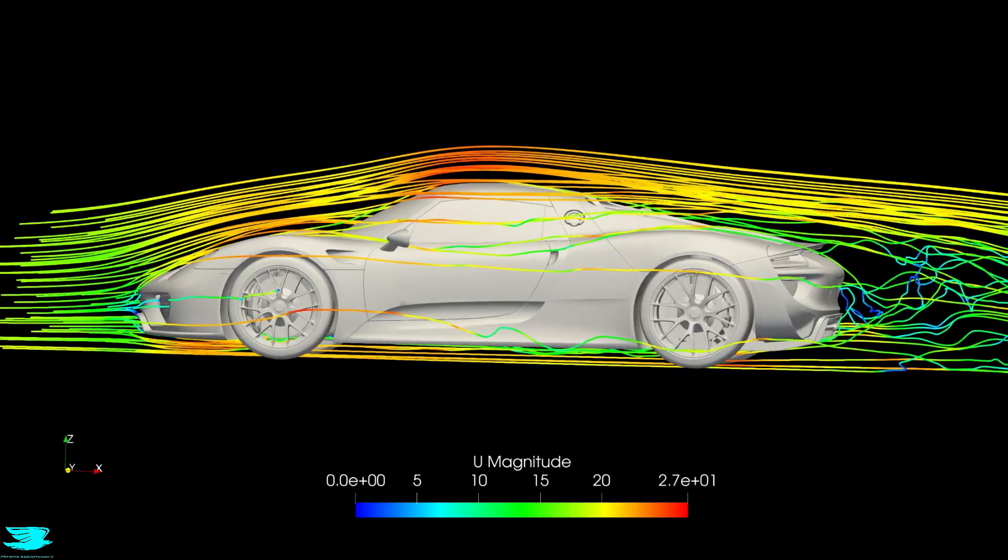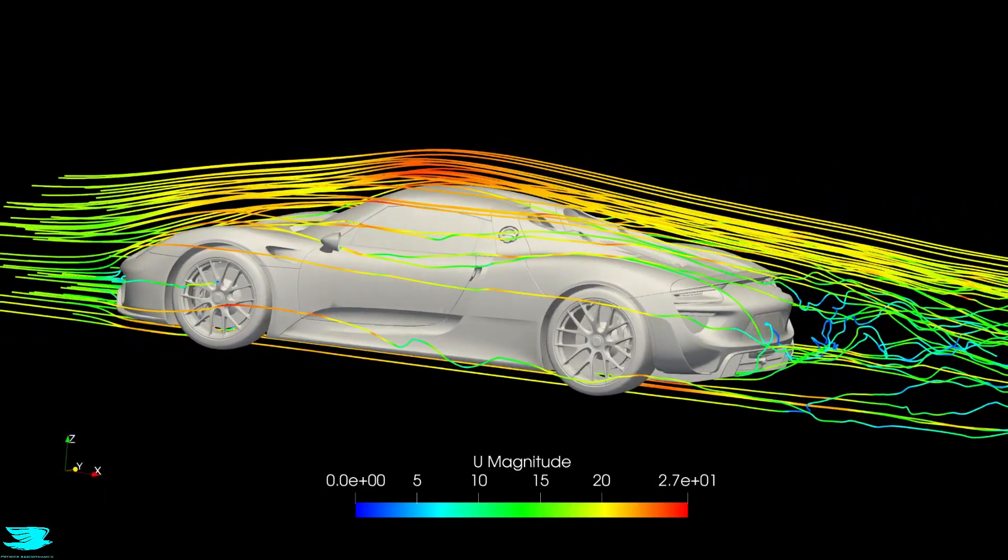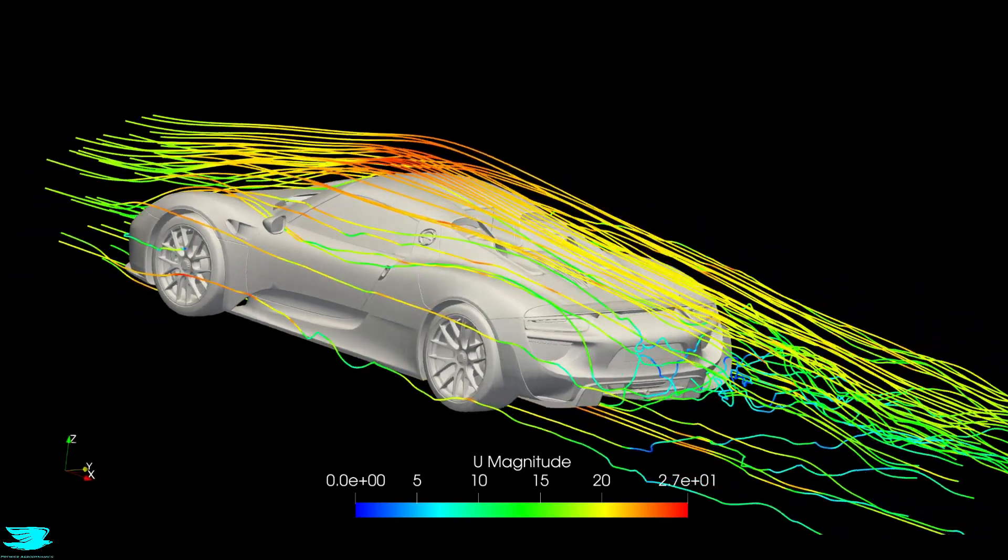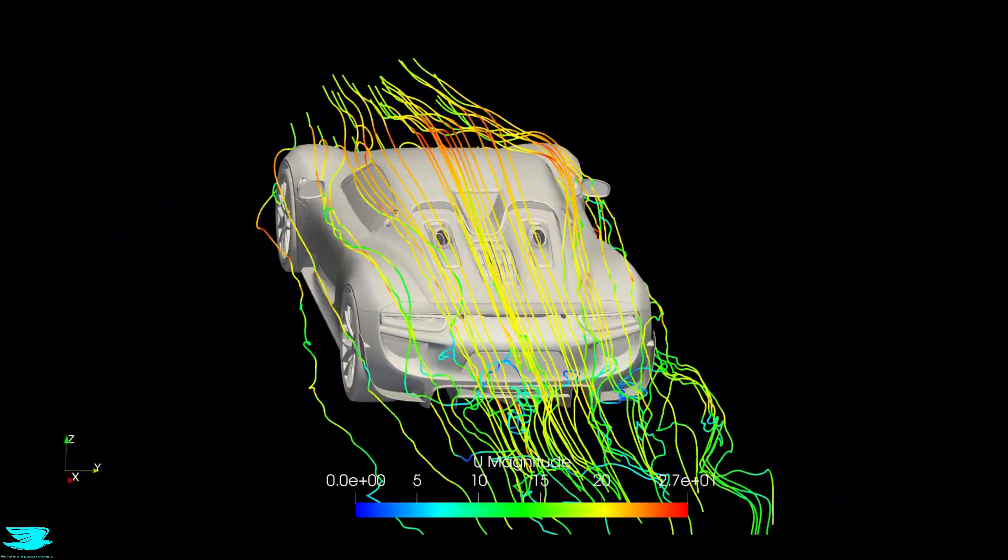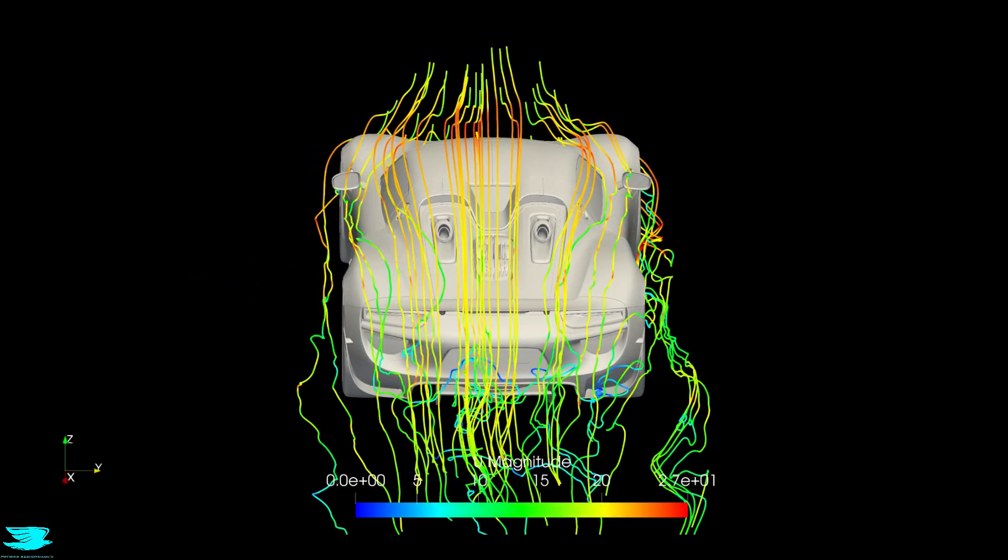I mean, the Spyder can do 0-100 kph in 2.6 seconds and has a top speed of 214 mph, so its aerodynamics should be good, let's find out.